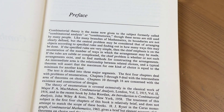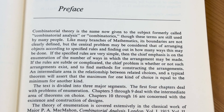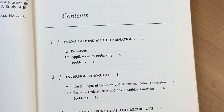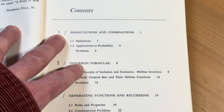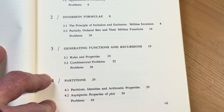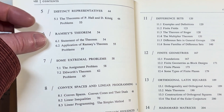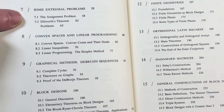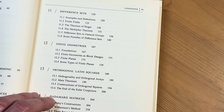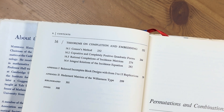Combinatorial Theory is the name now given to the subject, formerly called combinatorial analysis or combinatorics, though these terms are still used by many people. So it starts with permutations and combinations, inversion formulae, generating functions and recursions — you'll see these things in a discrete math class. Partitions. Thick pages, nice and thick. Distinct representatives, Ramsey's theorem, some extremal problems, convex spaces and linear programming, graphical methods, block designs. A lot of topics here. This is a little more advanced than other books — it has more combinatorics than a discrete math book would, and it's an entire book on it.